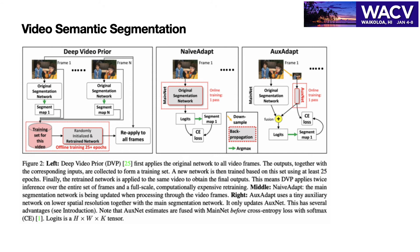On the right-hand side, we see our proposed AuxAdapt. We create a small segmentation network named AuxNet. This network works together with the main segmentation model. These two models produce results, which we sum up and pass through an argmax layer.